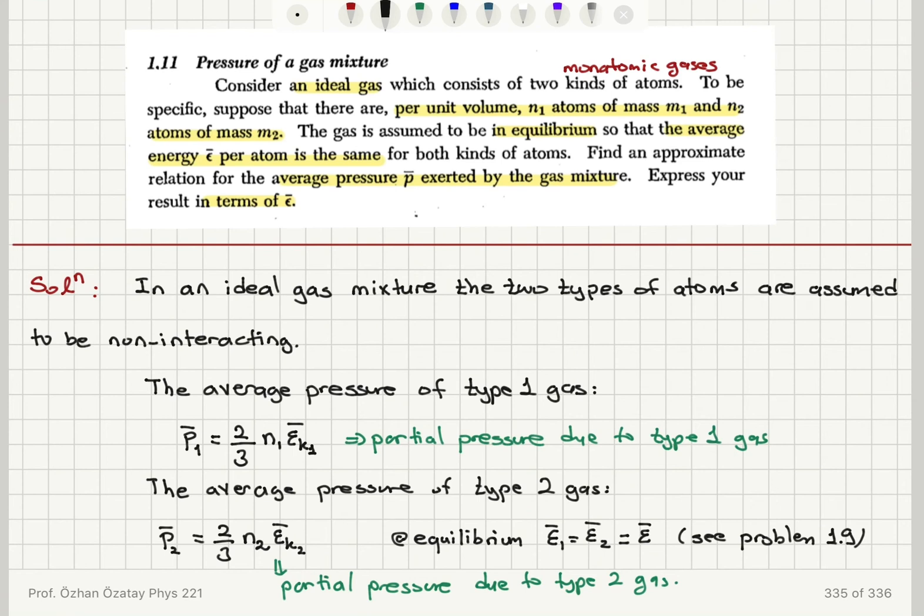Find an approximate relation for the average pressure exerted by the gas mixture expressed in terms of Epsilon bar. From elementary kinetic theory, we found that the mean pressure due to an ideal gas is two-thirds N Epsilon K bar. It's the partial pressure due to a gas. So for type 1, it's Epsilon K1 bar. For type 2, Epsilon K2 bar. And N is N1 for type 1 and N2 for type 2. And since the gas molecules are non-interacting, we can simply add these pressures to get the pressure exerted by the gas mixture.